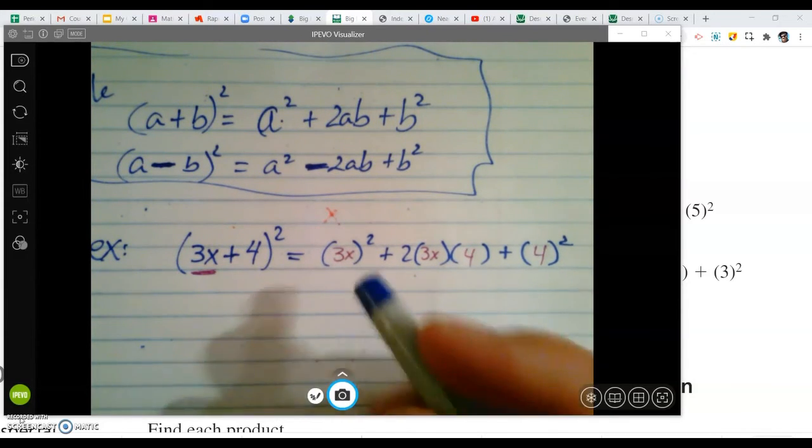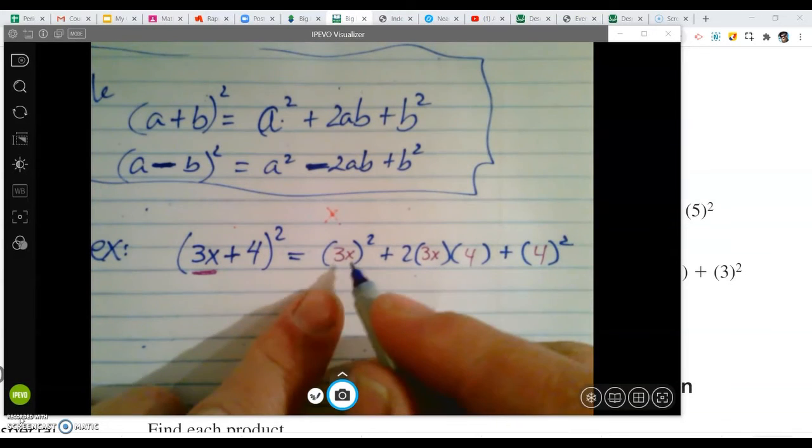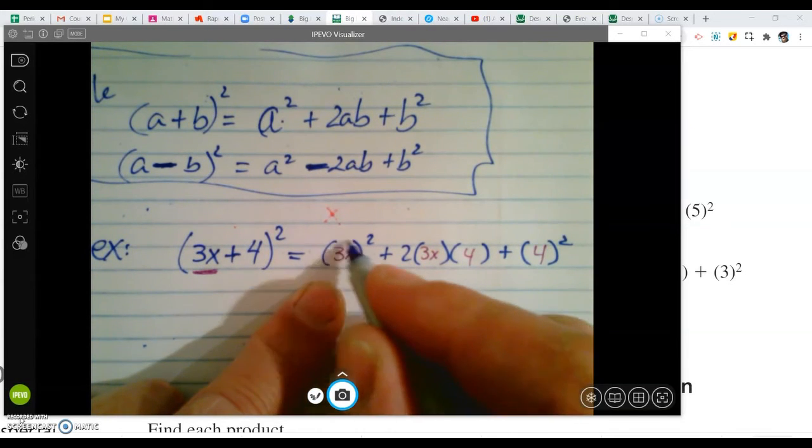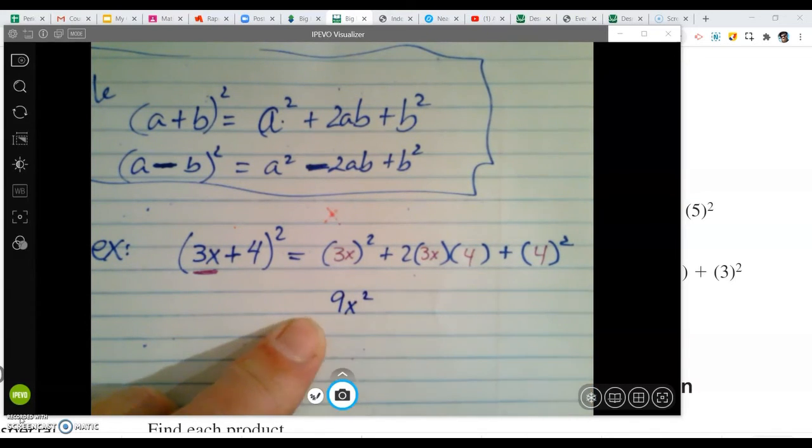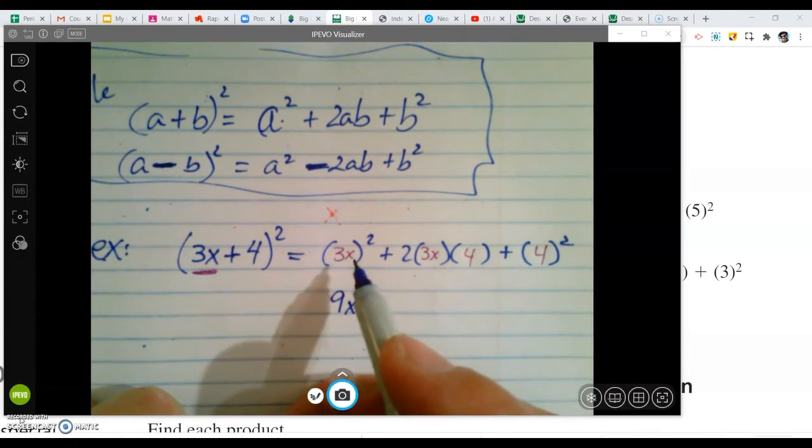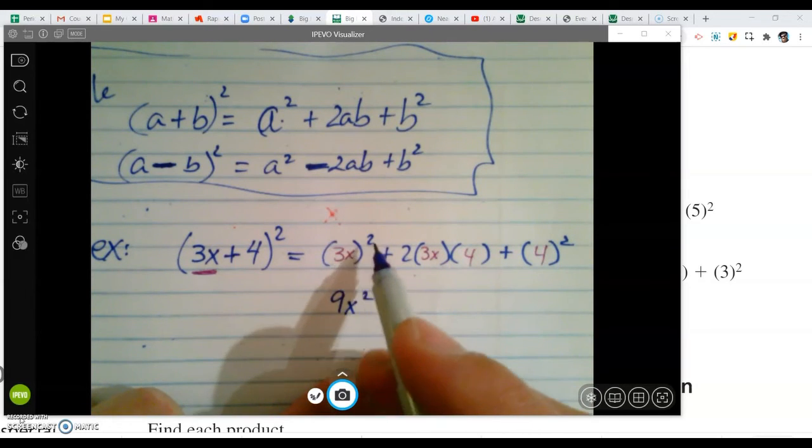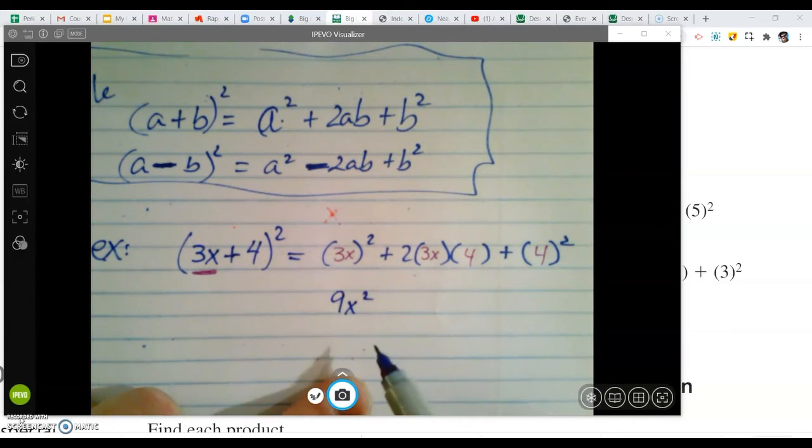Now, here's where you've got to be careful. This is why I put parentheses here. It's not just 3x squared. It's the whole 3 squared and x squared. So that's 9x squared. All right, so again, it's not just x squared, but the whole 3 squared also. That gives you 9.